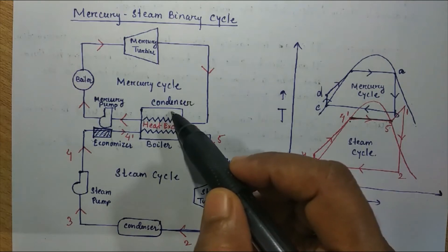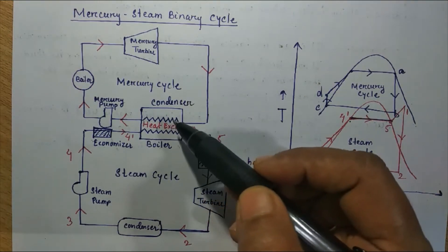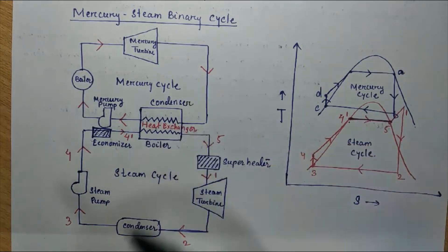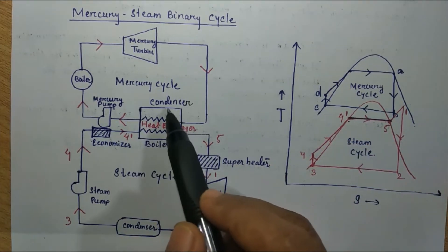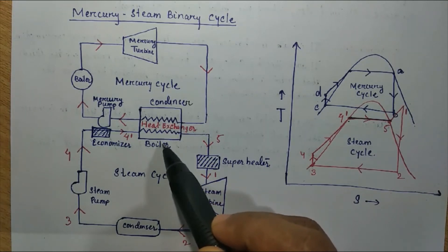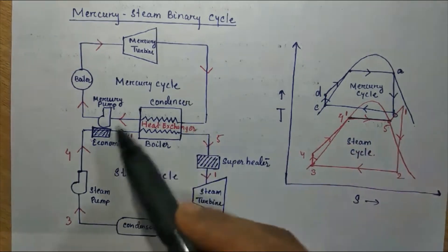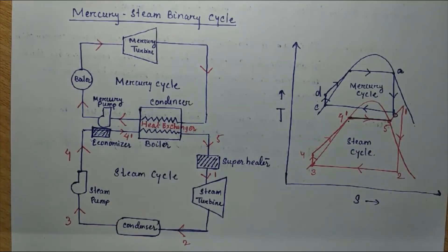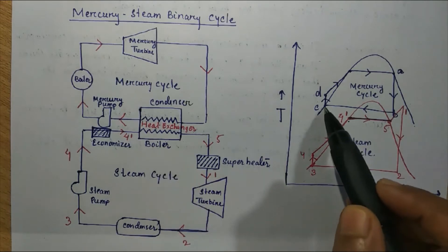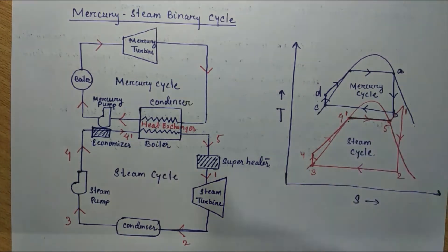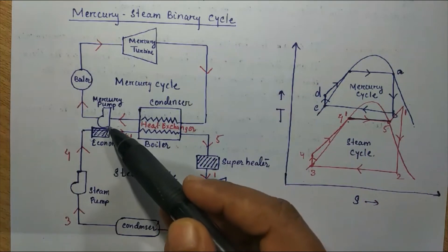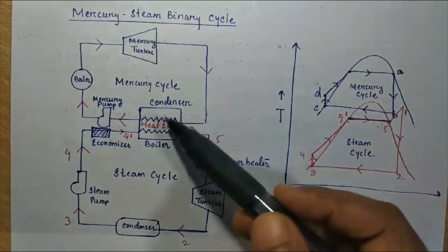From the condenser, heat is rejected and that rejected heat is absorbed by the boiler of the steam cycle. That's why the condenser and boiler are combinedly drawn together, as clearly visible in this diagram. After condensation, the vapor is converted to saturated liquid mercury, represented as state C, which is then fed back to the boiler by means of the mercury pump.